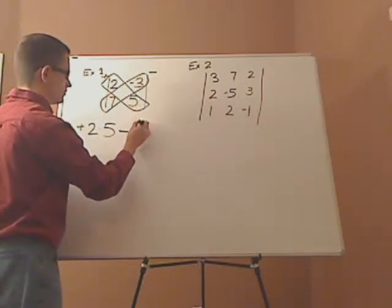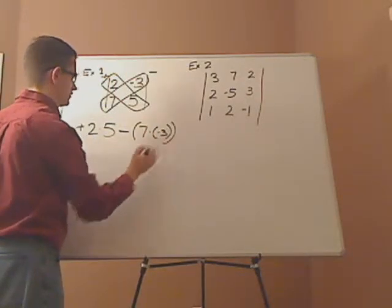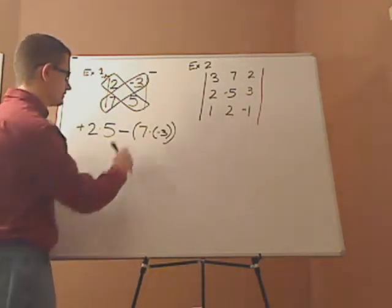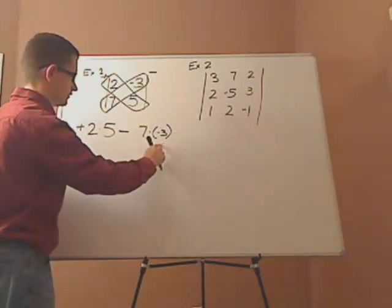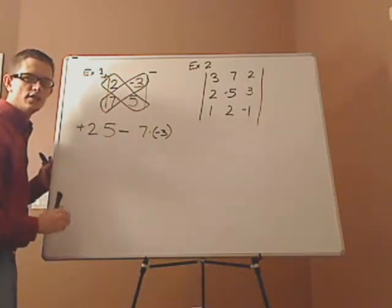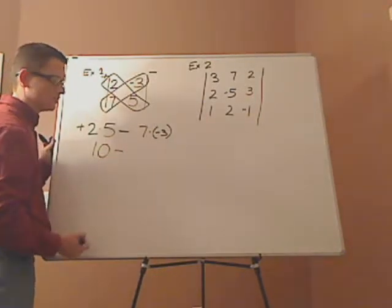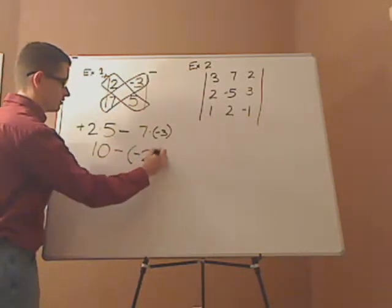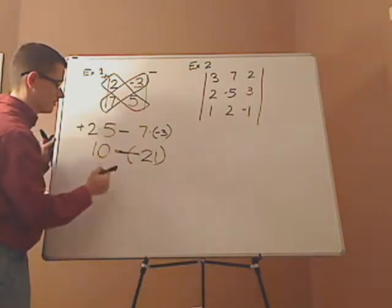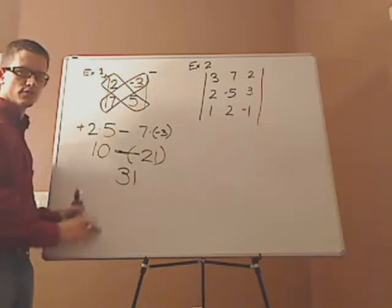You have these two numbers which you multiply: 7 times negative 3. Notice I put the negative 3 in parentheses to signify multiplication and to account for that negative sign. Then you simplify: 2 times 5 is 10, and 7 times negative 3 is negative 21. Since it's a double negative, it makes it positive. So it's 10 plus 21, which is 31. That's it — really straightforward.